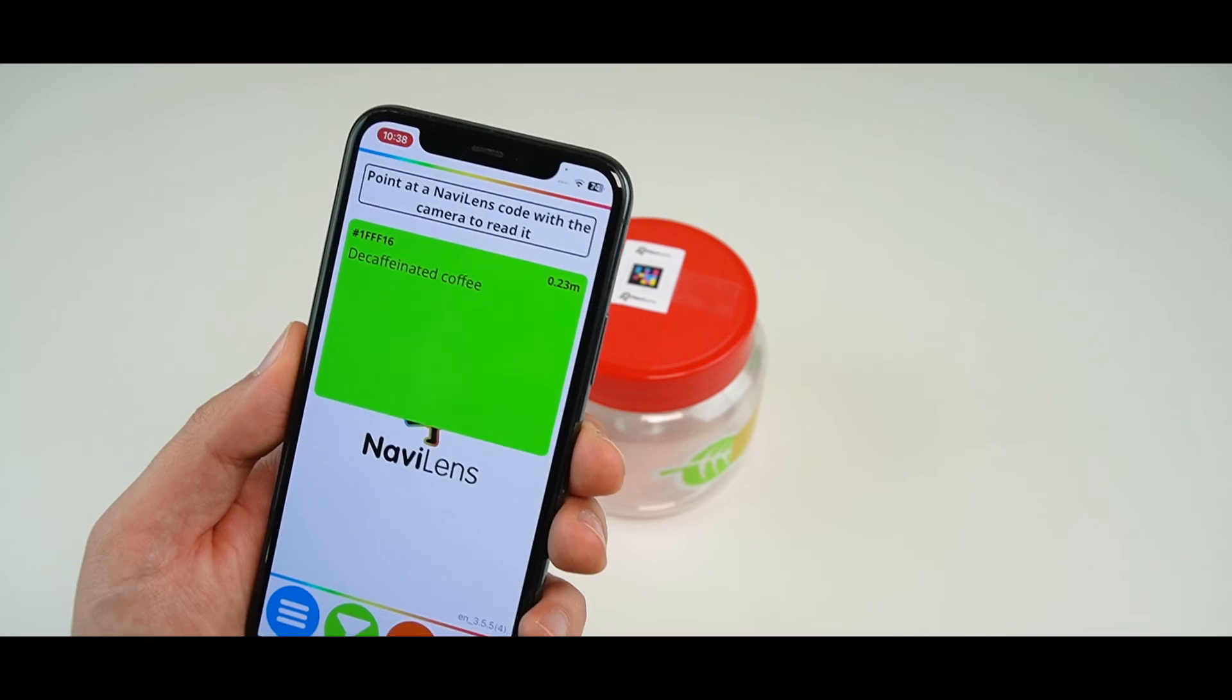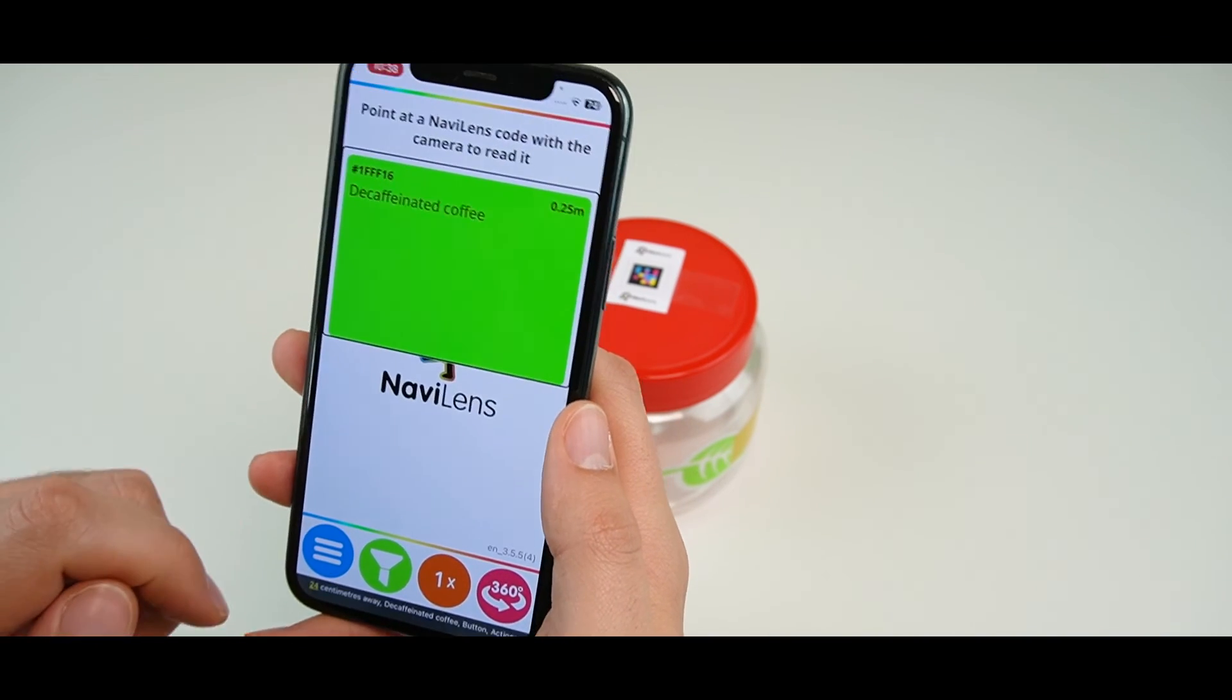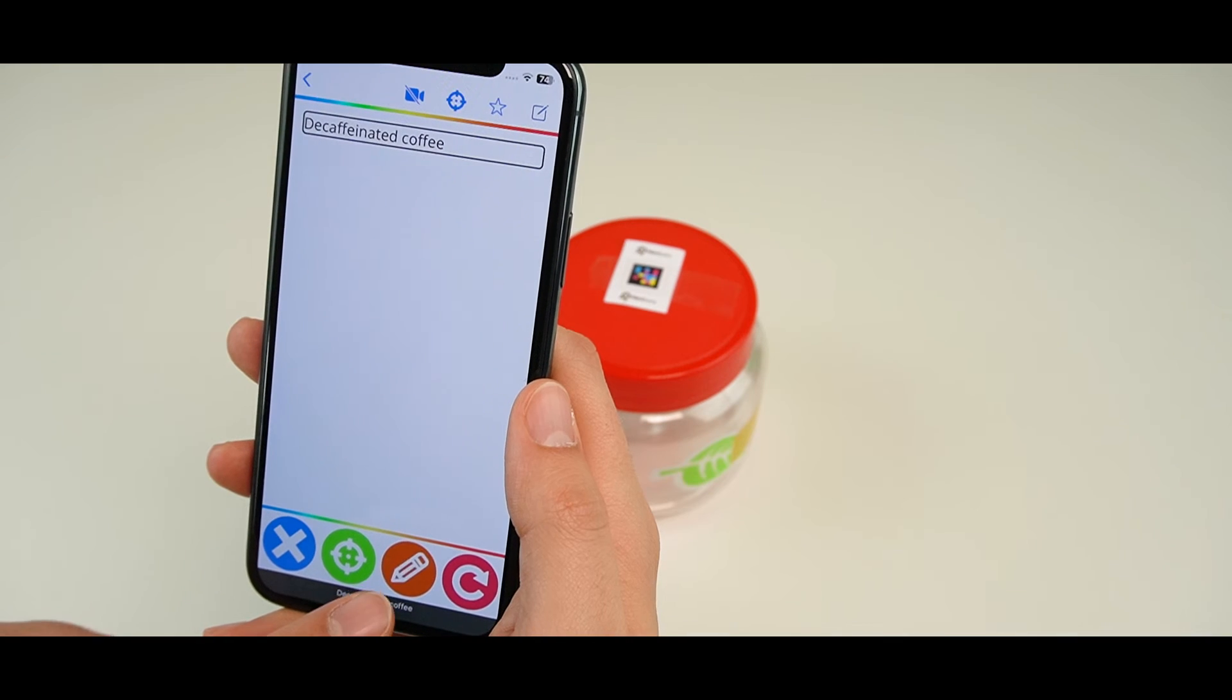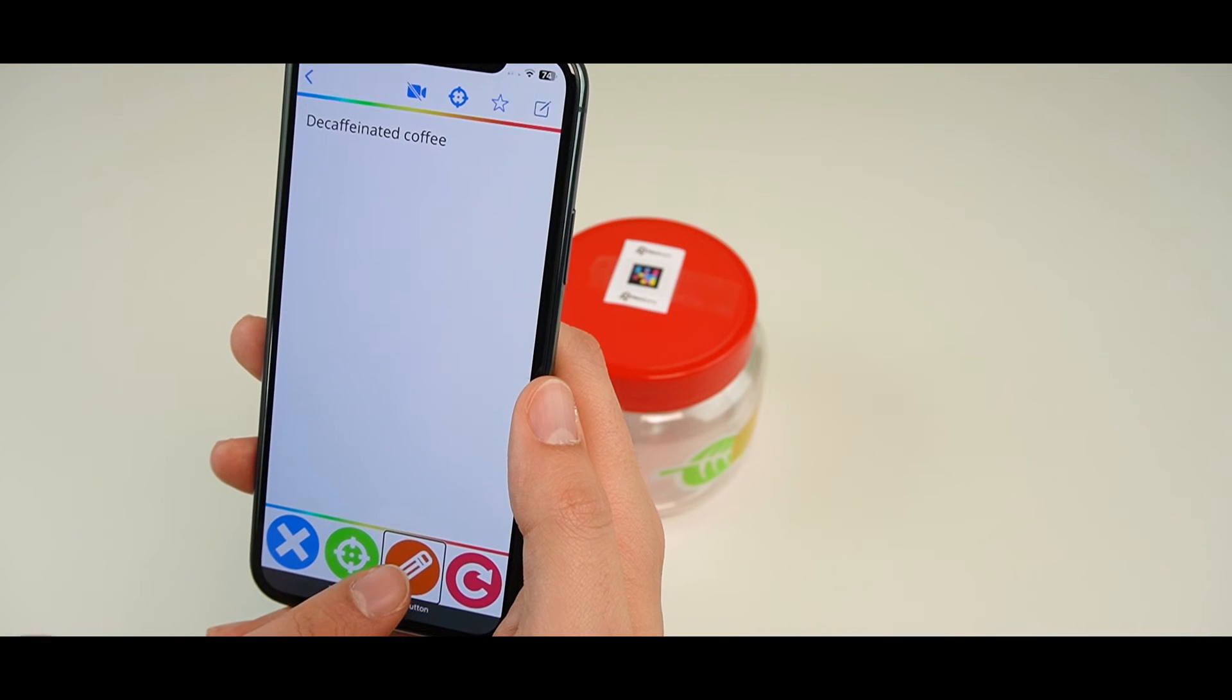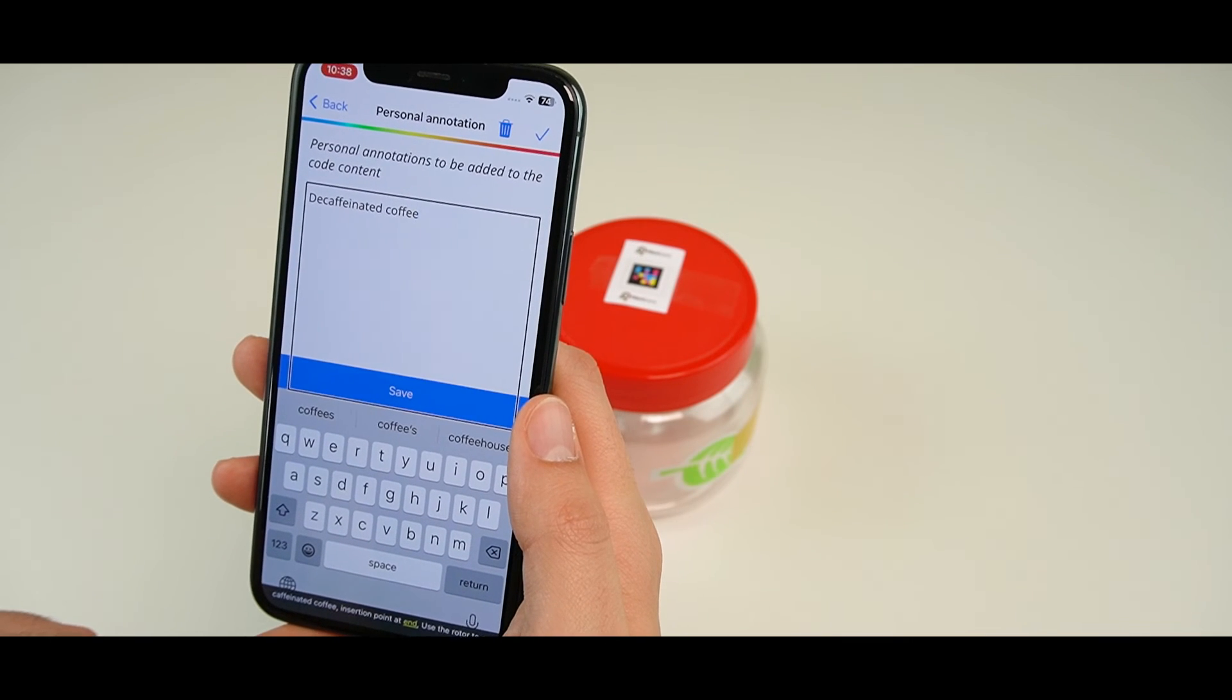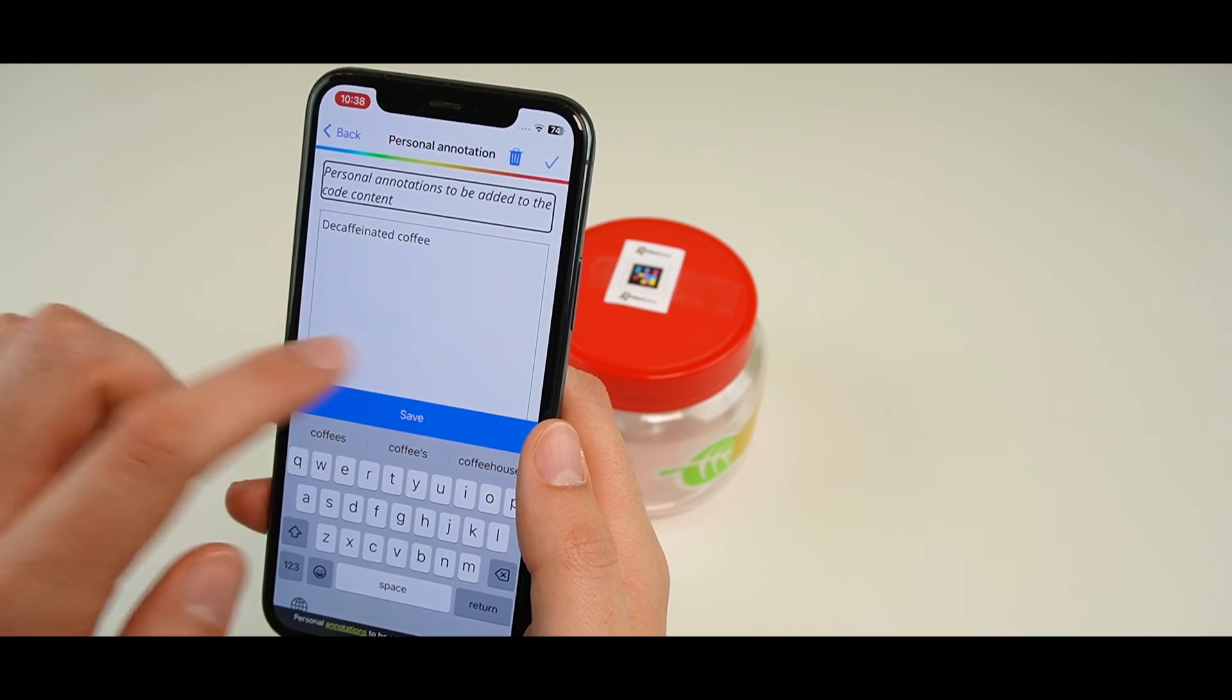To delete any of the personal annotations with a name assigned to them, you need to go back to the information pop-up window. Decaffeinated coffee. And click on personal annotations once again. Personal annotation. Then, you can either delete the text little by little or click on the delete icon which can be found at the top right-hand side of the screen.